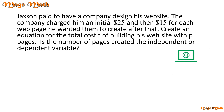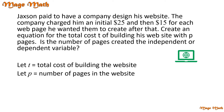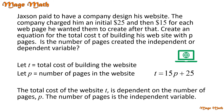Jackson paid to have a company design his website. The company charged him an initial $25 and then $15 for each webpage he wanted them to create after that. Create an equation for the total cost t of building his website with p pages. Is the number of pages created the independent or dependent variable? Let t equal the total cost of building the website and let p equal the number of pages in the website. The total amount of building a website is $15 per page plus the $25 initial charge, so we write the equation as t equals 15p plus 25. The total cost of the website t is dependent on the number of pages p. The number of pages is the independent variable.